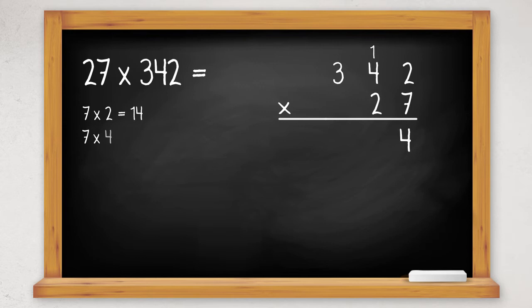7 times 4 is 28 plus the 1 we carried makes 29, so it's 9 down and carry the 2 at the top. 7 times 3 is 21 plus the 2 we carried makes 23. We could put this straight in our answer because we have no more numbers to multiply at the top.